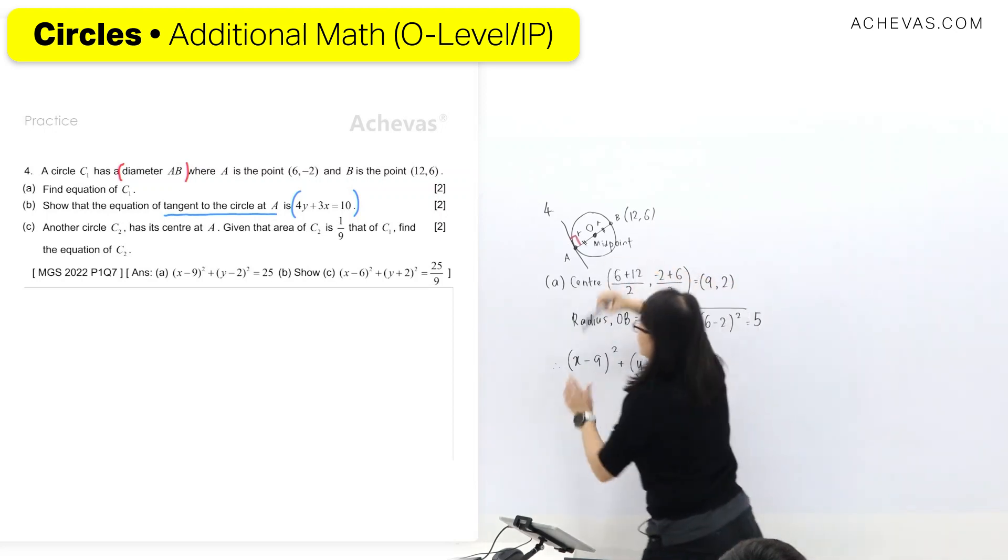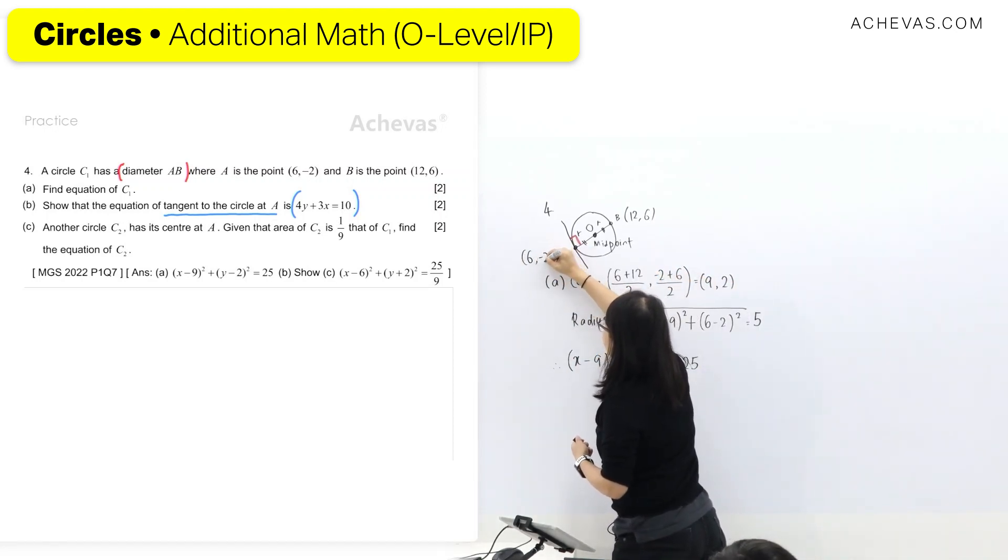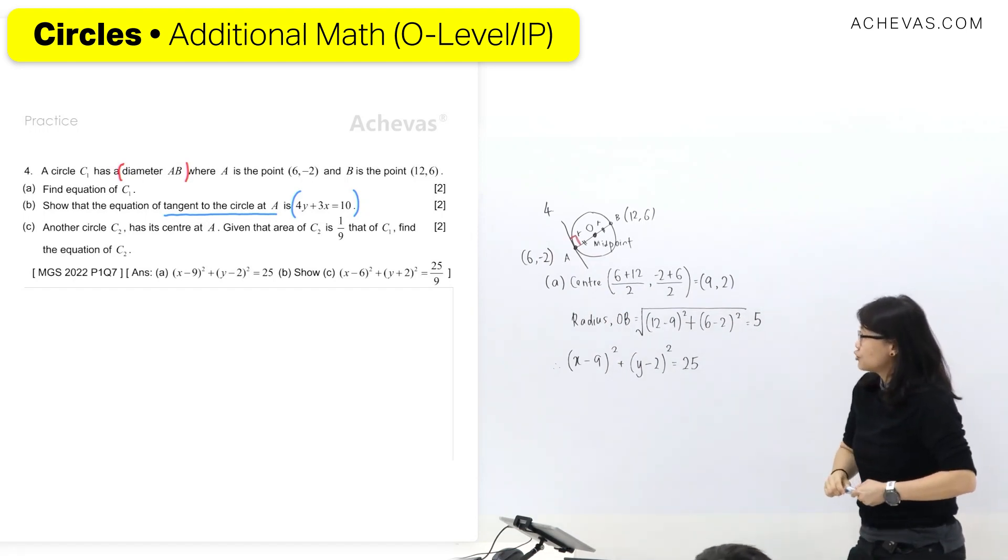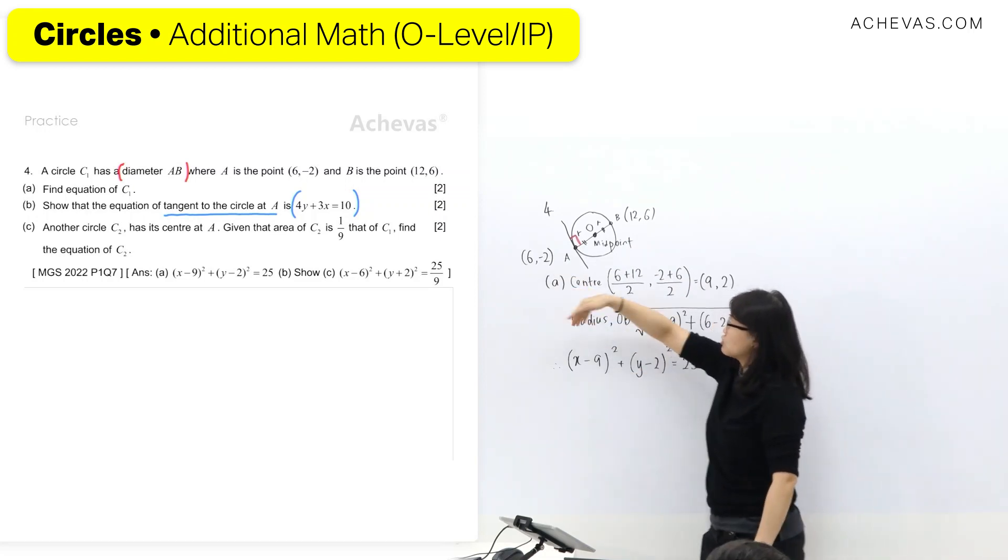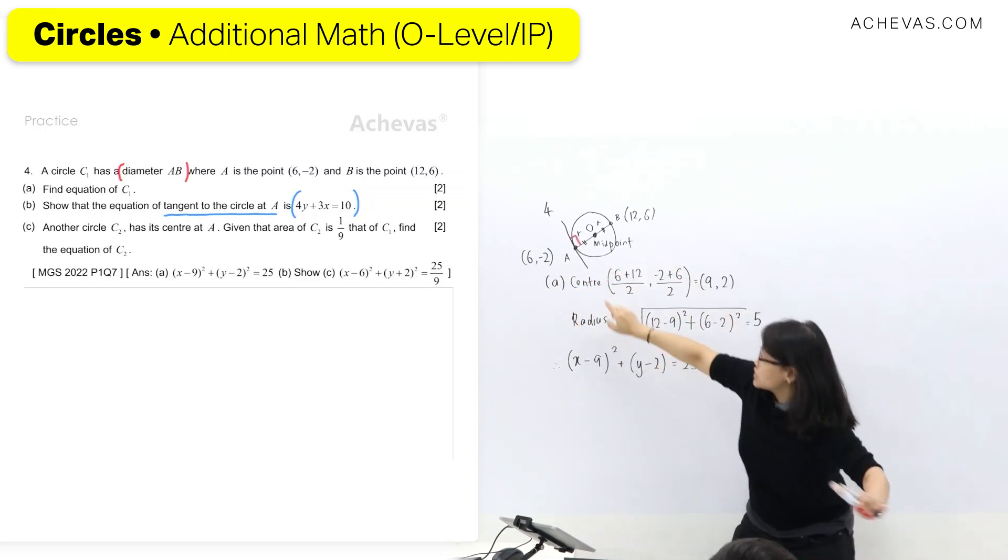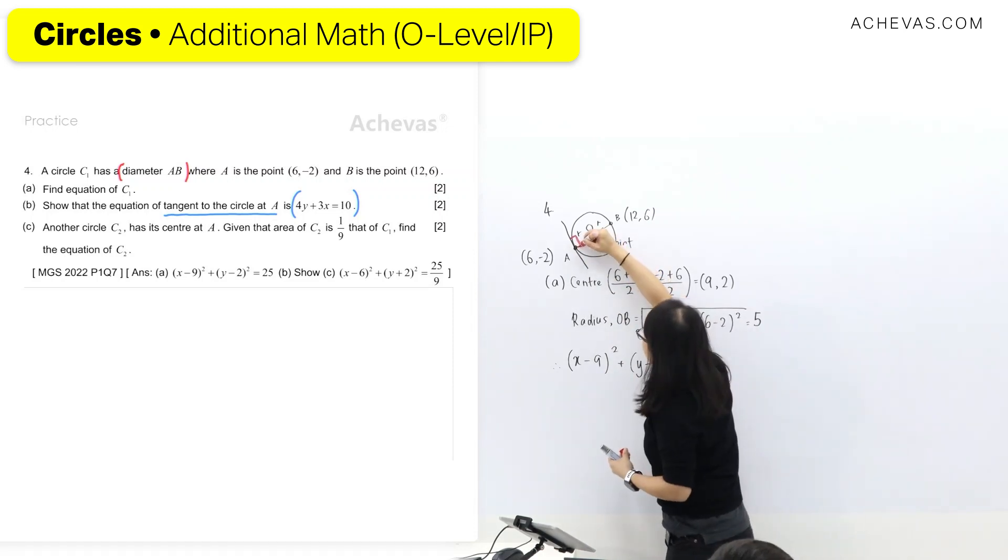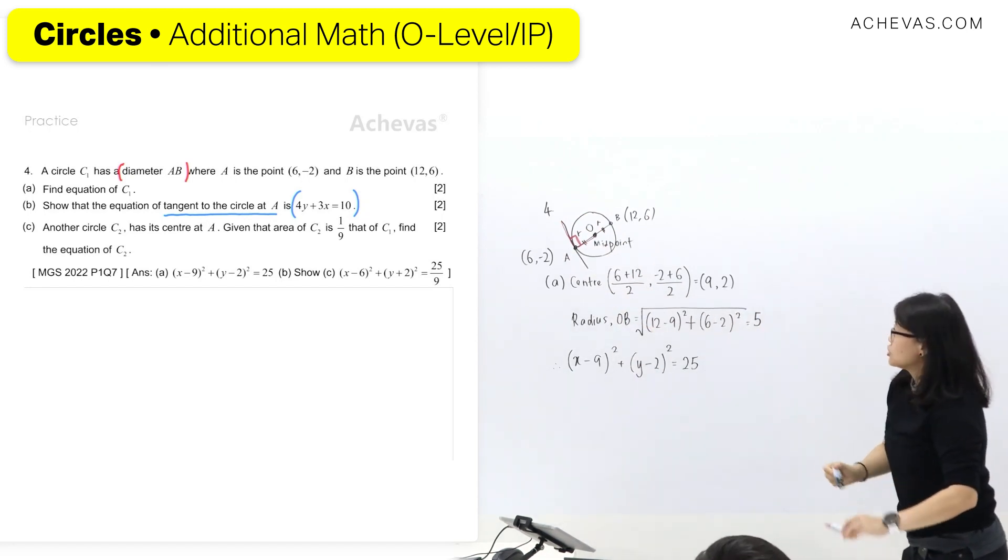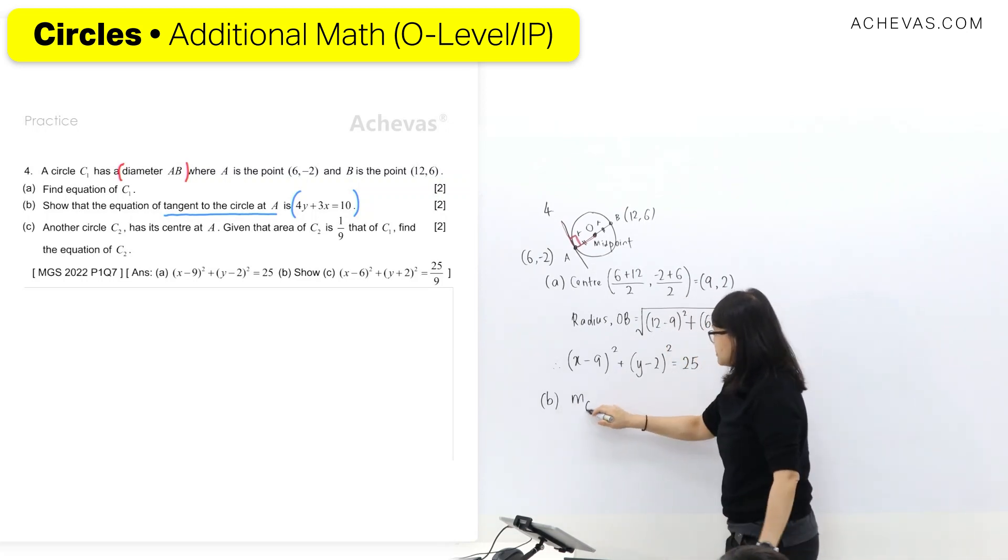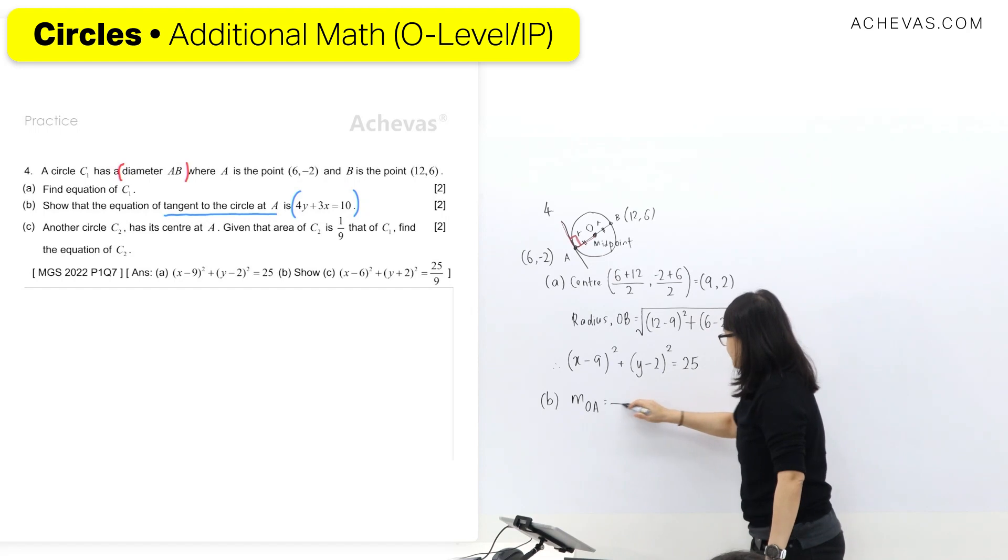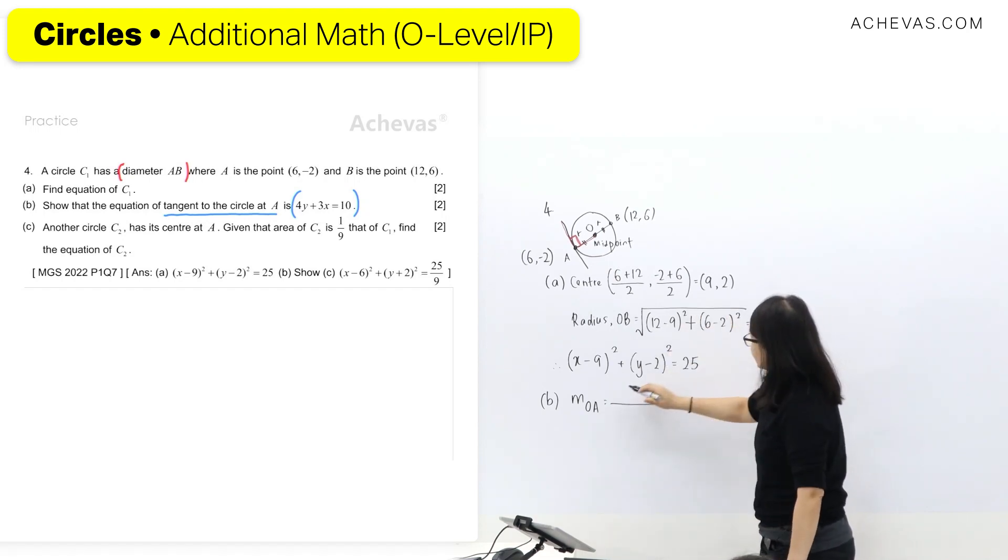Tangent radius is like 90 degrees. So I want to form this line here. I already have point A which is (6, -2). Remember in coordinate geometry, we want to form a line equation, we need two info: a point and also a gradient. We don't have a gradient, that's why we have this 90 degrees. If I can find gradient here, then I can form gradient here as well. I take the perpendicular gradient. So first I do the gradient for OA first.